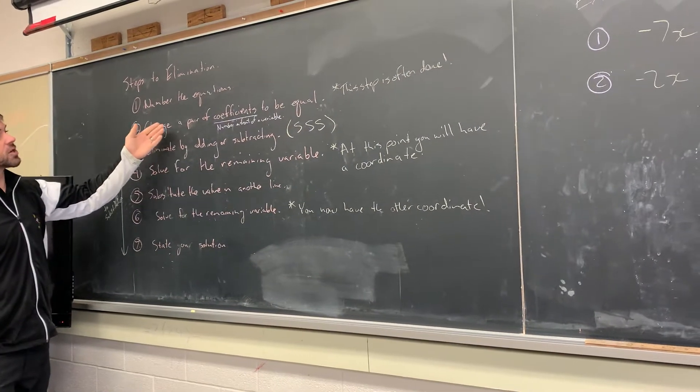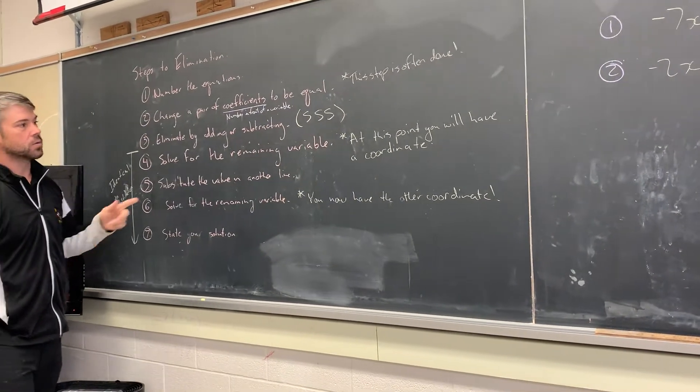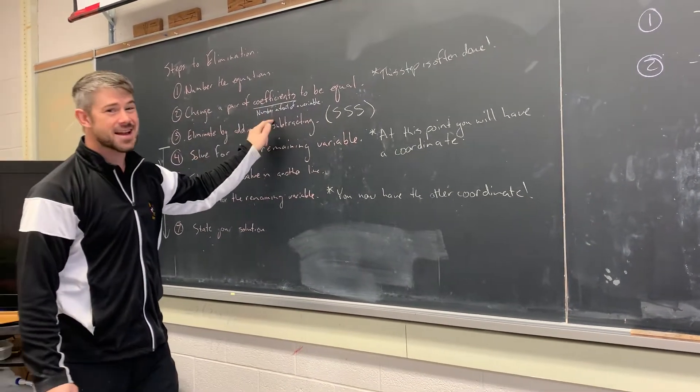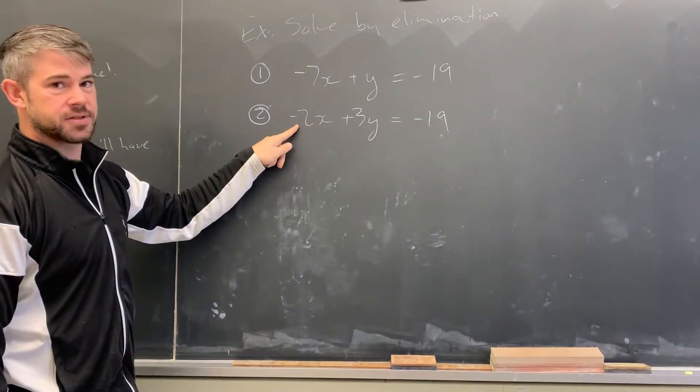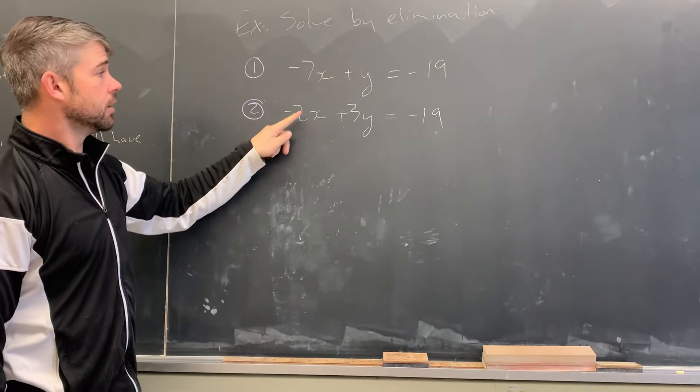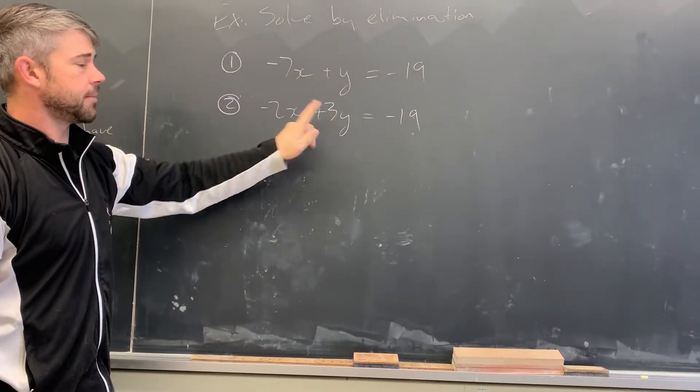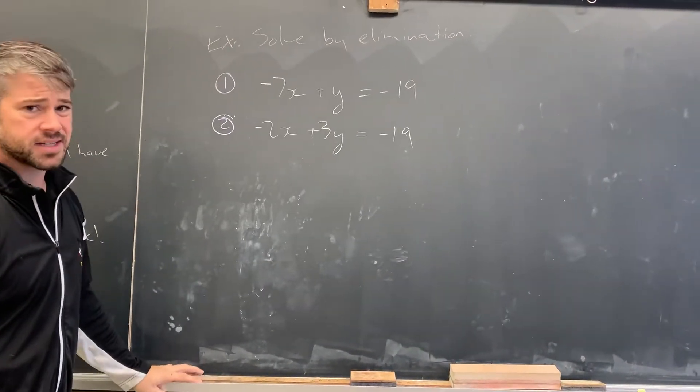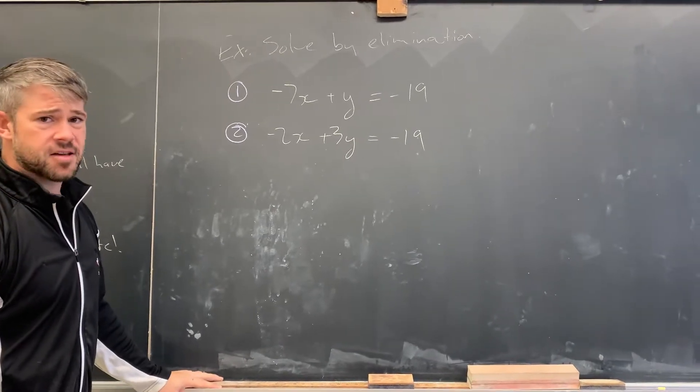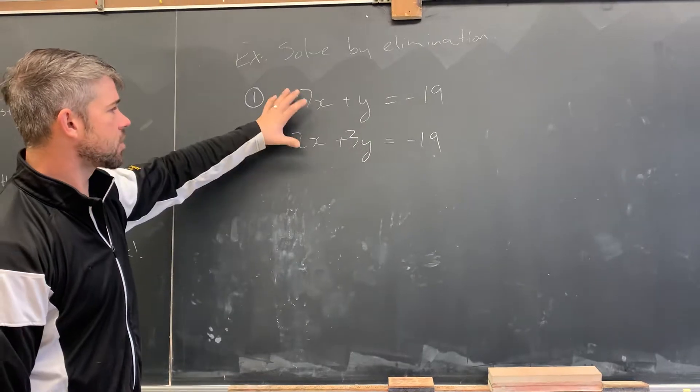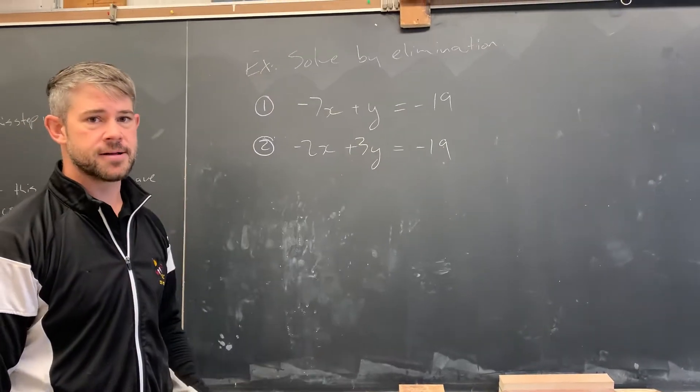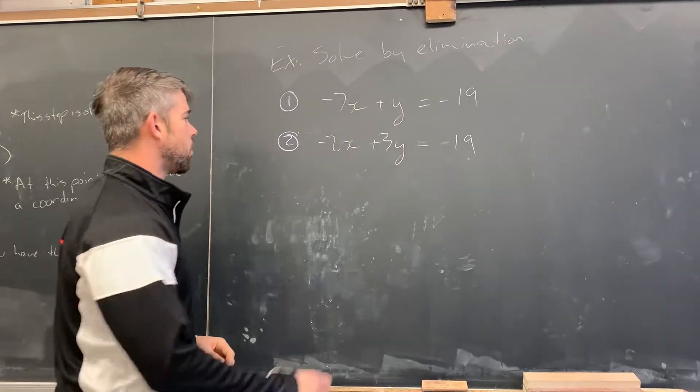Our next step says to change a pair of coefficients to be equal. Remember coefficients are the number in front of the variable. So here I have negative seven and negative two. Those clearly aren't equal. My other coefficients are positive one and positive three, and those aren't equal either. So now I have to decide which pair is easier to make equal, the x coefficients or the y coefficients. In this case, I think it's going to be the y coefficients.